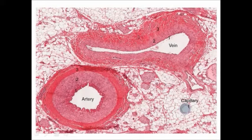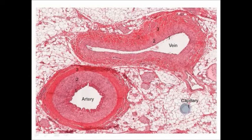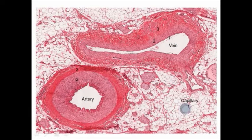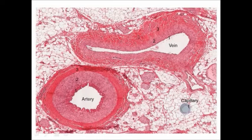In many veins, particularly those in the lower body, there are little one-way valves which prevent blood flowing backwards, ensuring the only direction blood can move — no matter how sluggishly — is back toward the heart.